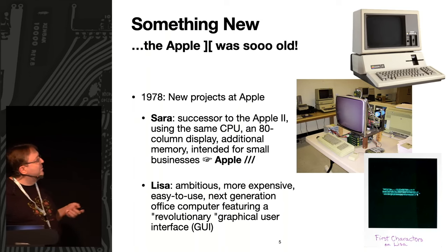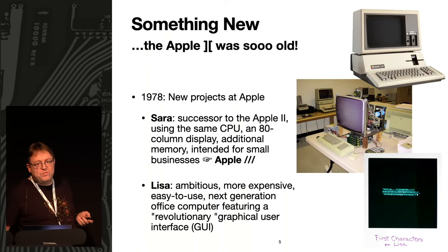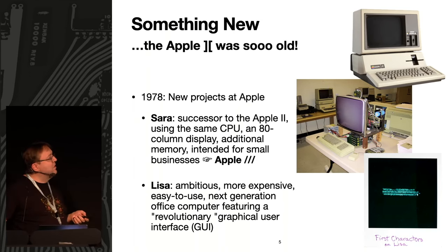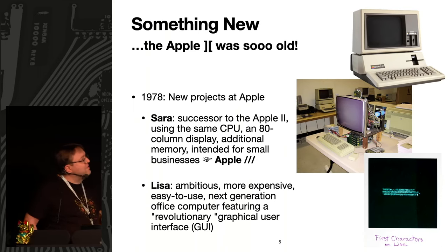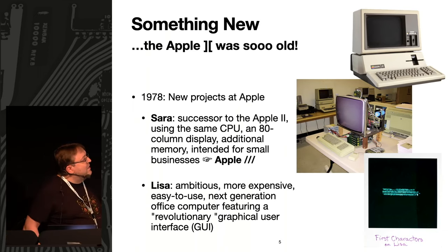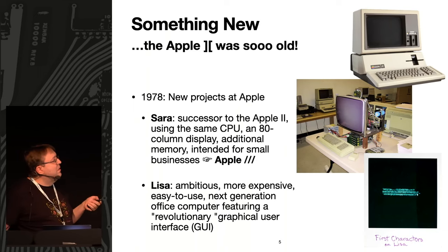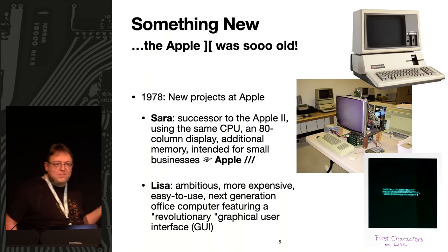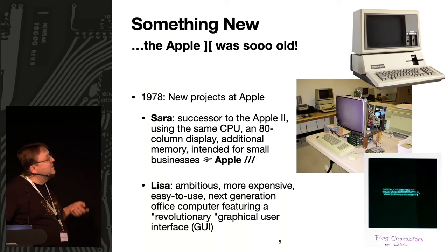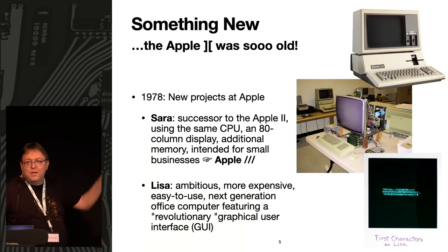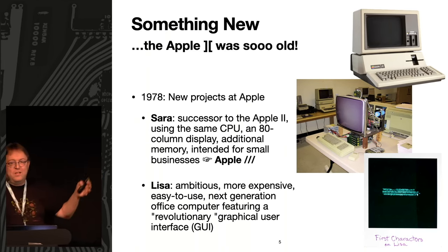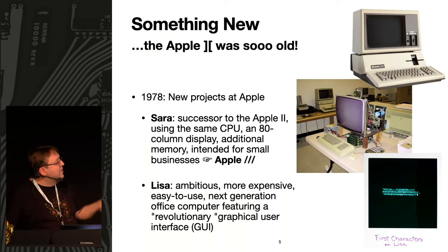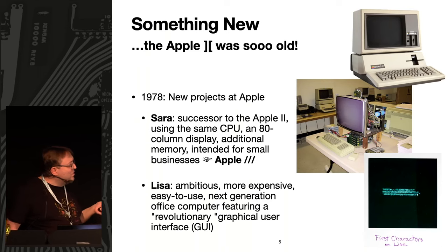In 1978, two new projects started at Apple, both named after girls. Sarah — named after the daughter of one of the Apple II developers — was meant to be an Apple II successor and advanced business system, still mostly text-based but with an advanced operating system for small business. This became the Apple III: still a 6502-based machine, but with more memory, 80-column color screen, and advanced OS. Nobody bought it.